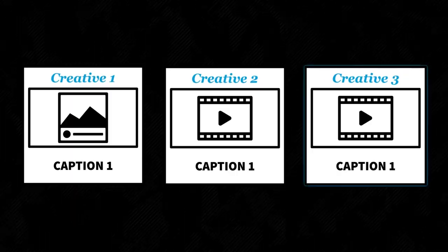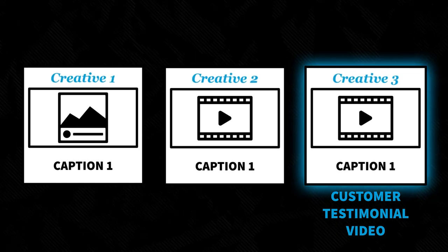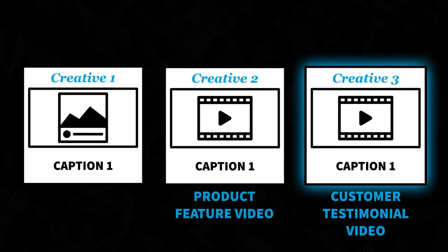Then you identify which ad performed the best in terms of engagement, sales, or whatever your goal is. Keeping one element the same throughout — such as the caption — and changing the other elements, such as the creative, allows you to see exactly what it was about an ad that made it work. If all the captions are the same but ad number three with a customer testimonial video performed way better than ad number two with a product feature video, that's important information. You can go forward understanding that testimonials resonate with your audience better than product information.